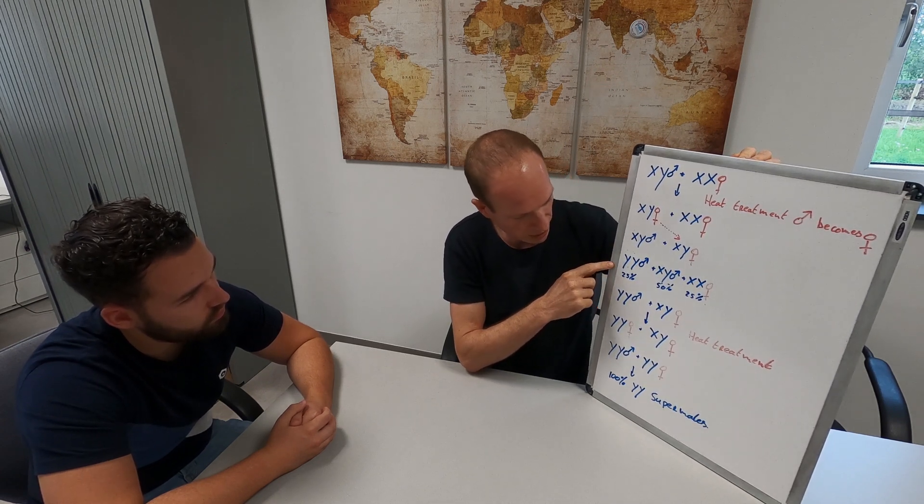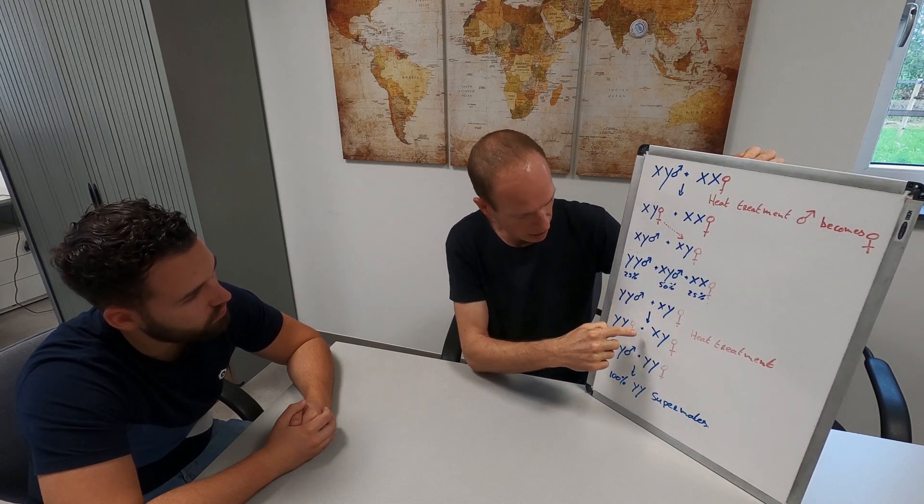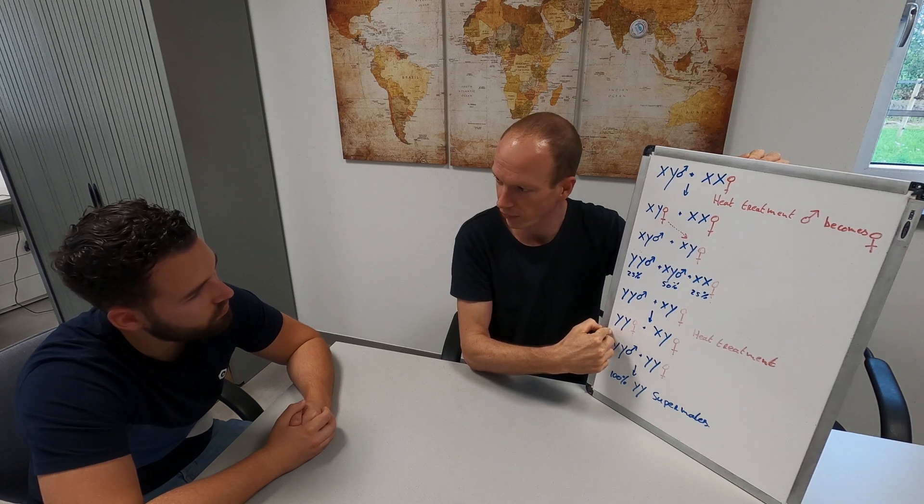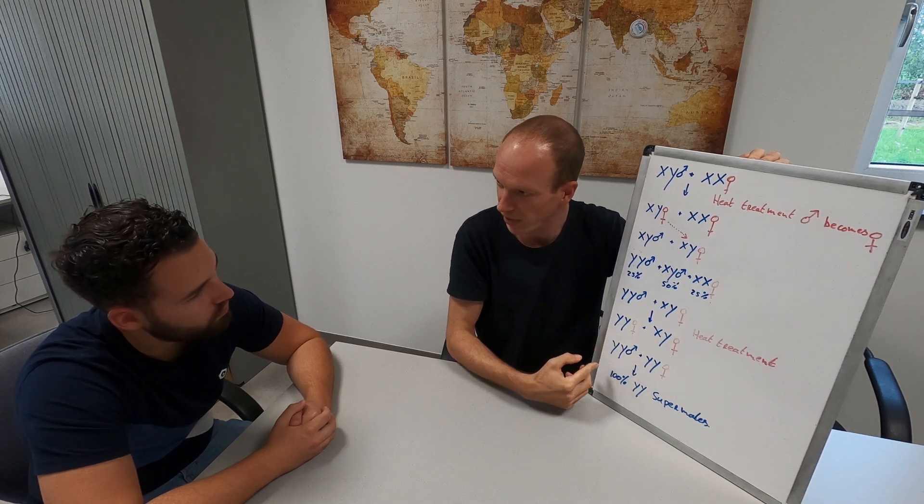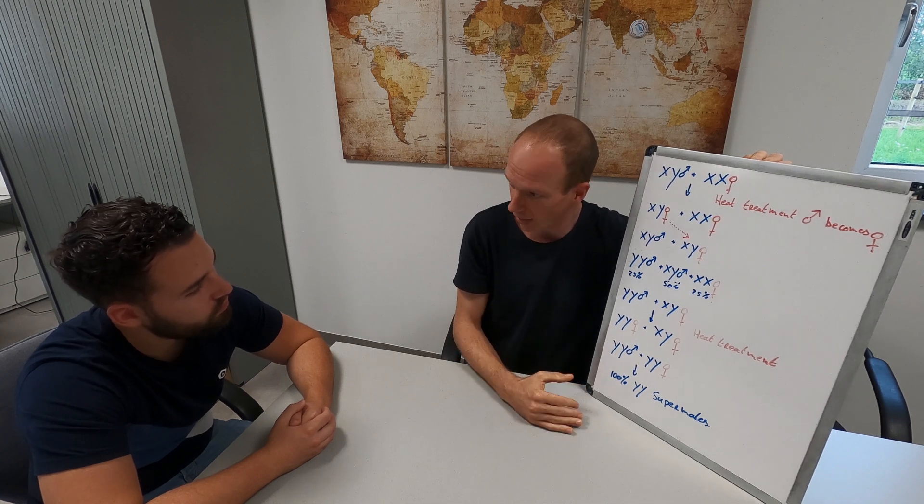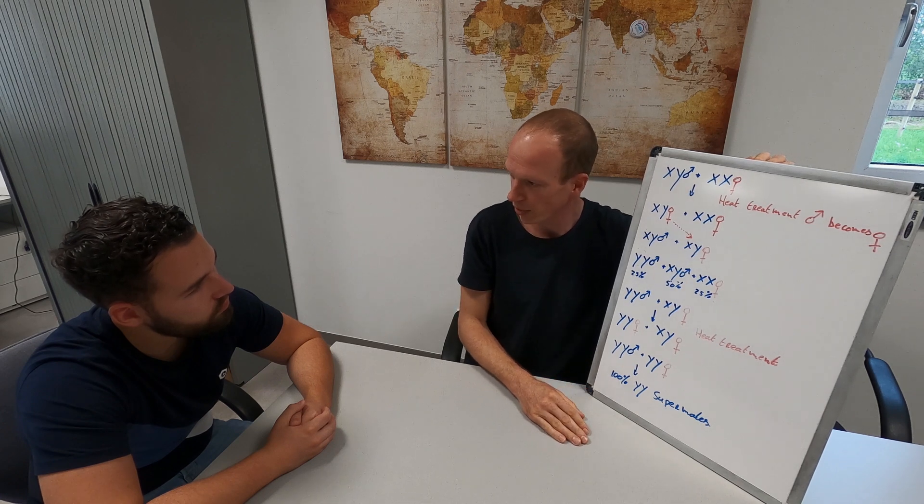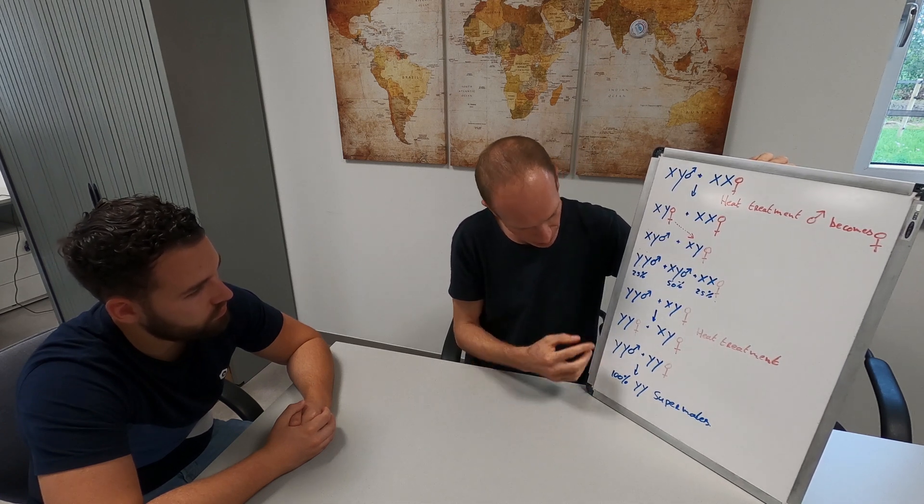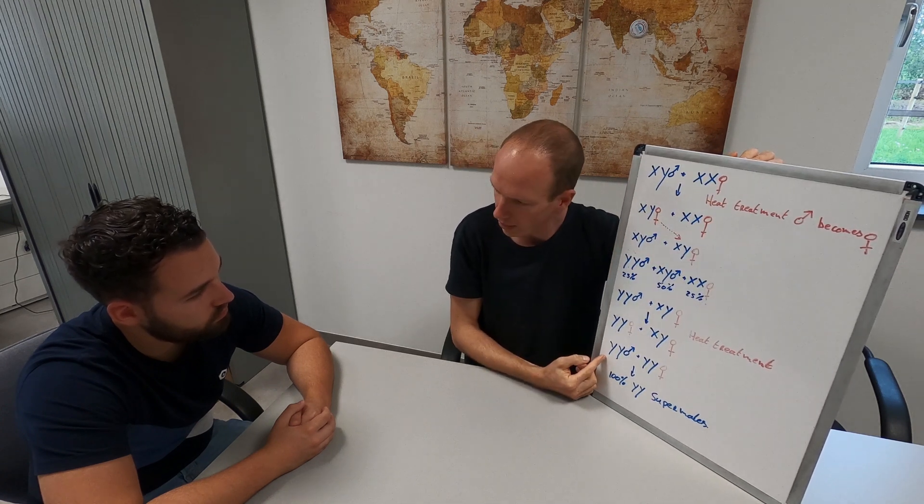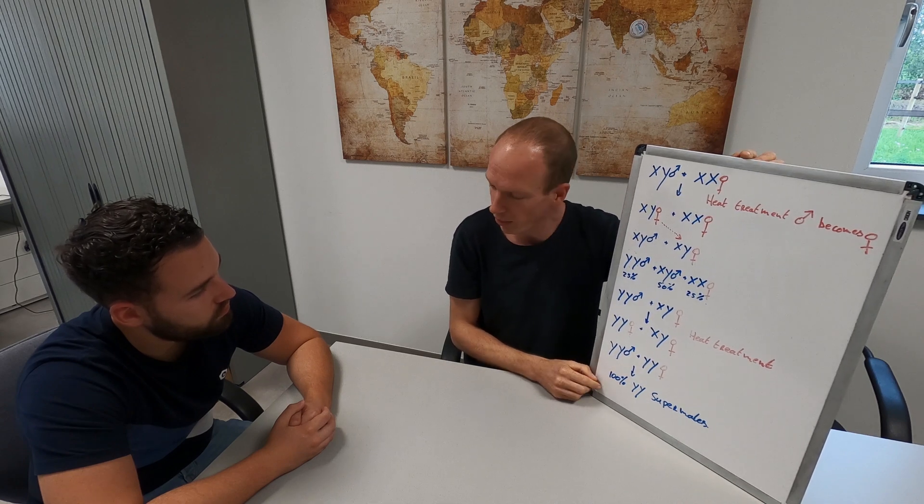And with these fish we can even continue this process. We can change the gender of the genetically super male to a genetically super male female. So it's functional as female, she produces X, but she has two Y chromosomes. So she's only able to produce male offspring. And that's how we develop from a normal strain all the way to YY males and females that produce only male offspring.